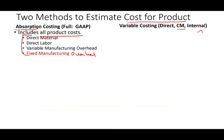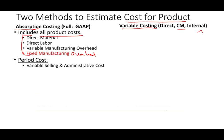Absorption costing is what you've been learning throughout your managerial or cost accounting course, because the new method really is variable costing. It includes all product costs. The period costs include variable selling and administrative, and fixed selling and administrative.